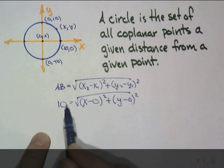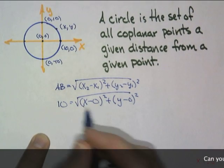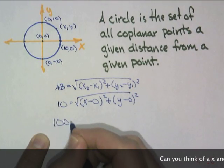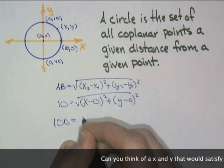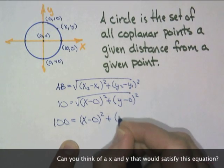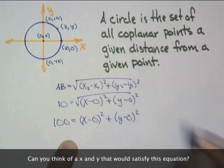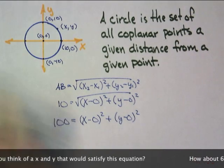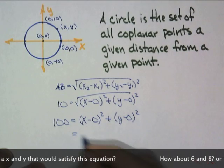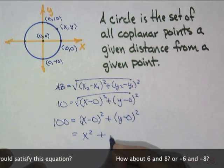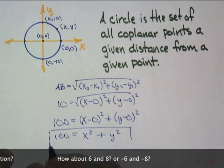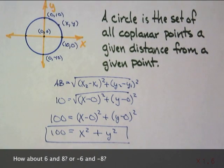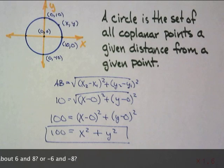Now, we can make this prettier by getting rid of this radical if we square both sides. Actually, 100 is equal to (x - 0)². I mean, I'll write it as this. But you know that x - 0 is just simply x and y - 0 is simply y. So, that would really simplify to x² + y² = 100. Fantastic, right? That's your equation for a circle with radius 10 centered at the origin.